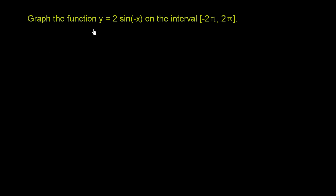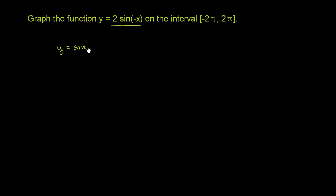We're asked to graph the function y is equal to 2 sine of negative x on the closed interval negative 2 pi to 2 pi. To do this, I'm first going to graph y equals sine of x, and then think about how it's changed by the 2 and the negative in front of the x.